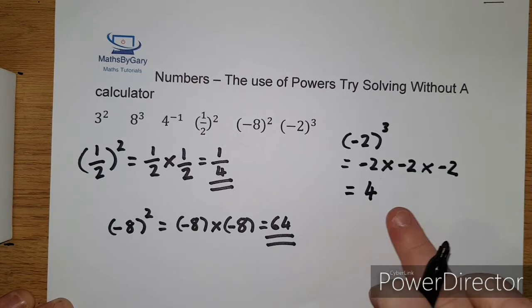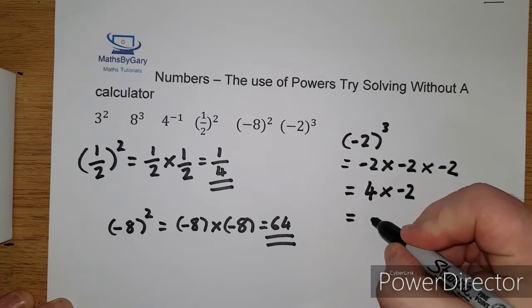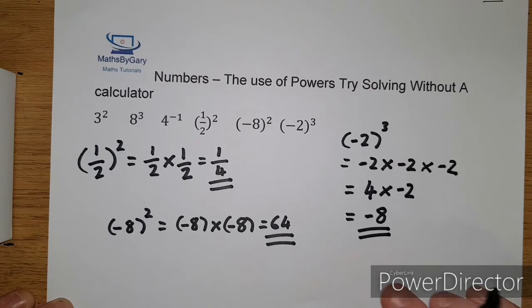So minus 2 times minus 2 will give us positive 4. But we have to then multiply again by minus 2 which then gives us negative 8. So just be careful when you're using minuses because the power can change.